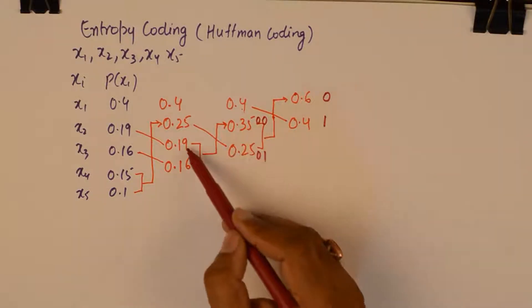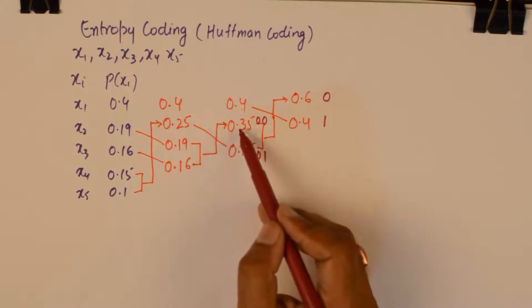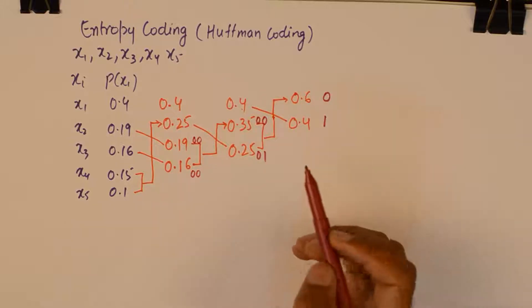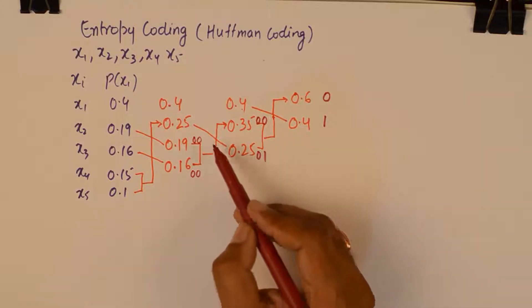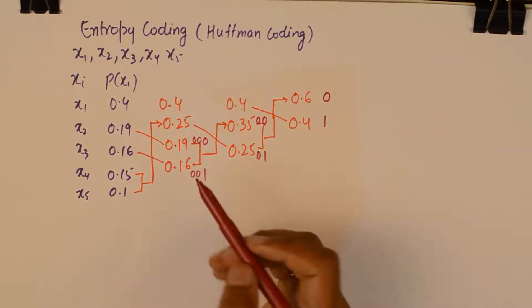And 0.19 and 0.16 has a parent in 0.35. So write down a 0 0 here and a 0 0 here. And further 0.19 gets a 0, 0.16 gets a 1.